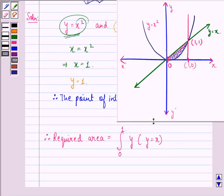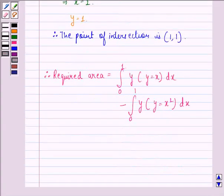We can write this as the integral from 0 to 1 of y where y equals x dx minus the integral from 0 to 1 of y where y equals x square dx, which gives us the integral from 0 to 1 of (x minus x square) dx.